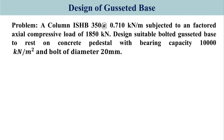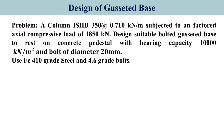The problem: a column ISHB 350 at 0.710 kN per meter is subjected to a factored axial compressive load of 1850 kN. Design a suitable bolted gazetted base to rest on a concrete pedestal with bearing capacity of 10,000 kN per meter square, using bolts of diameter 20 mm, FE41 grade steel, and 4.6 grade bolts.